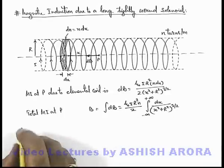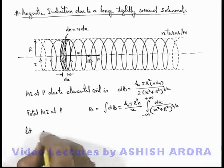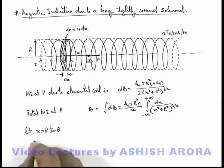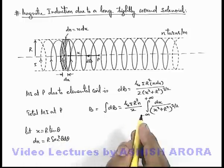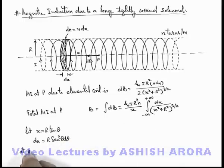In this situation, to integrate it, we can substitute x = r tan θ. On differentiating, we get dx = r sec² θ dθ. And if we change the limits, then at x tending to infinity, we are getting the value of θ as π/2, and for x tending to minus infinity, the value of θ is minus π/2.